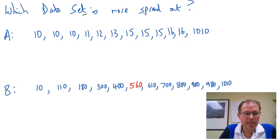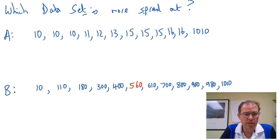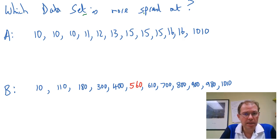Hi there, I'm Graeme Lewis and in this short video we're going to discuss how to find the interquartile range of these data sets, there are 12 numbers each, and also why we would use it and talk about spread of data.